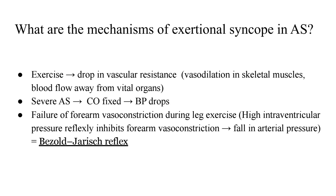Another mechanism: when a person with severe aortic stenosis is doing leg exercises, there is usually a forearm vasoconstriction to maintain arterial blood pressure. However, in cases of severe AS, there is a failure of forearm vasoconstriction during these leg exercises. The reason is that the high intraventricular pressure reflexly inhibits forearm vasoconstriction — a pan-vagal response — preventing vasoconstriction even in non-exercising forearms, leading to overall vasodilatation and a fall in arterial pressure. This reflex is known as the Bezold-Jarisch reflex.